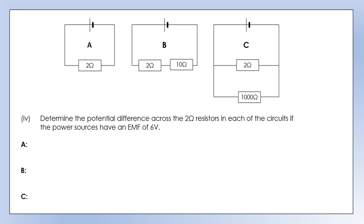Now determine the potential difference across the 2 ohm resistors with an EMF of 6 volts. Circuit A has only one component, so it must be 6 V — all 6 joules given to each charge must be removed. Circuit B: current through the 2 ohm is 0.5 amps, times 2 ohms resistance gives a potential difference of 1 volt. Applying the same to the 10 ohm: 0.5 × 10 = 5 volts, and 5 + 1 = 6, which checks out. Circuit C: the components are in parallel, so the EMF equals the potential difference across each branch separately — 6 V across the 2 ohm and 6 V across the 1,000 ohm; it is the current that splits between them.